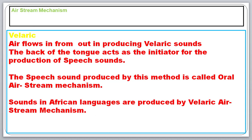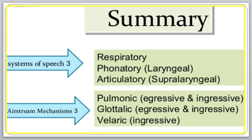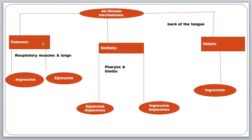To sum up: there are three systems of speech — respiratory, phonatory, and articulatory — and three types of mechanisms: pulmonic, glottolic, and velic. In pulmonic, there are two types of process: ingressive and egressive. Glottolic too has ingressive and egressive, which are named implosives. Velic is only ingressive, not egressive — the air gets in and the sound is rotated. In the mind map: pulmonic involves the lungs and respiratory muscles and produces ingressive and egressive pulmonic airstream mechanism.